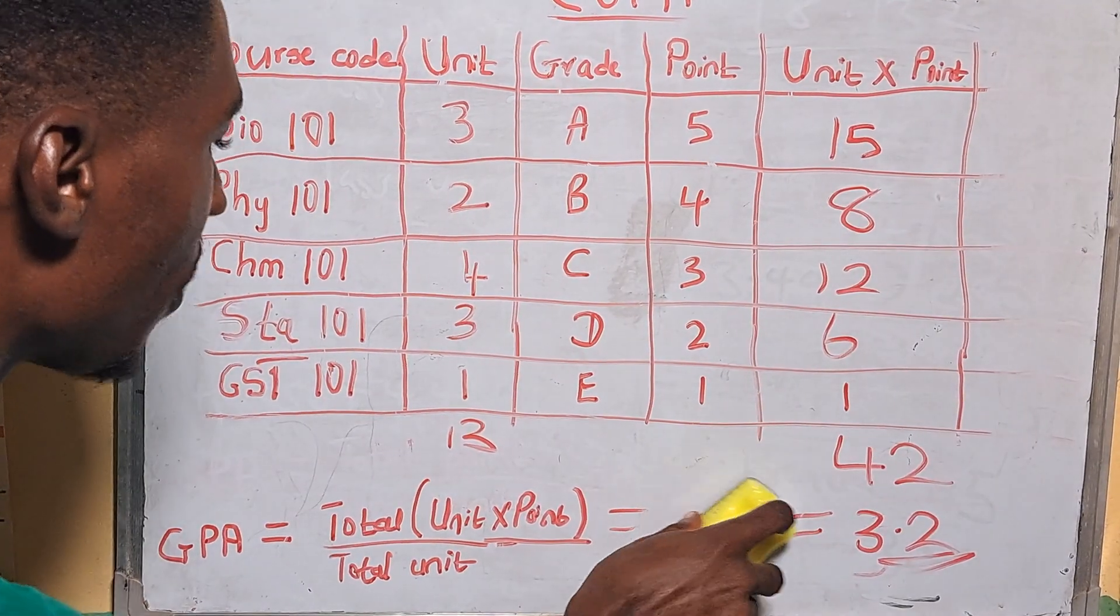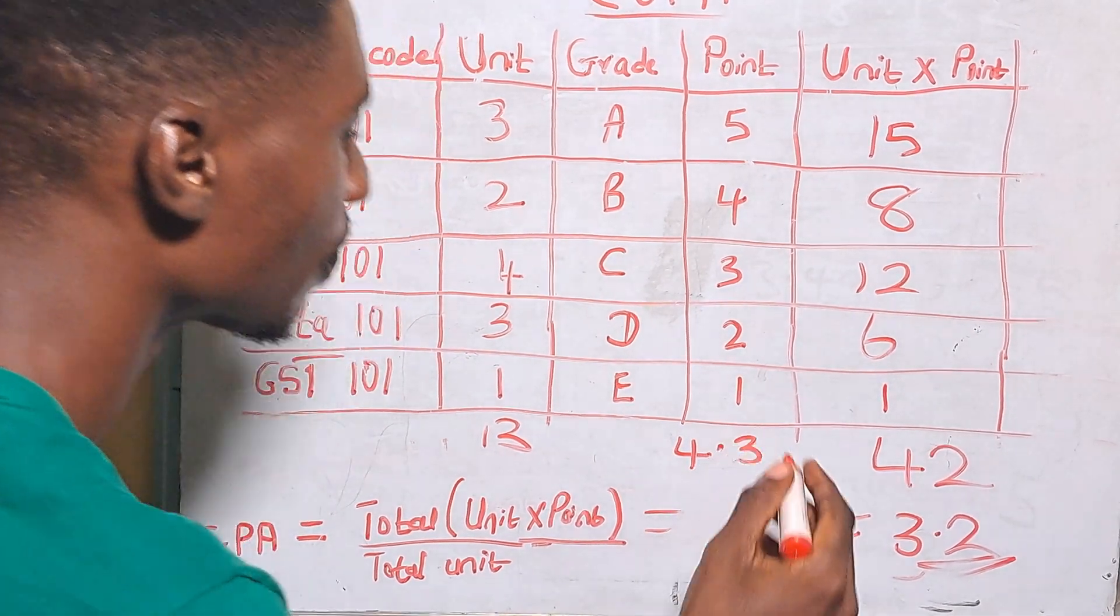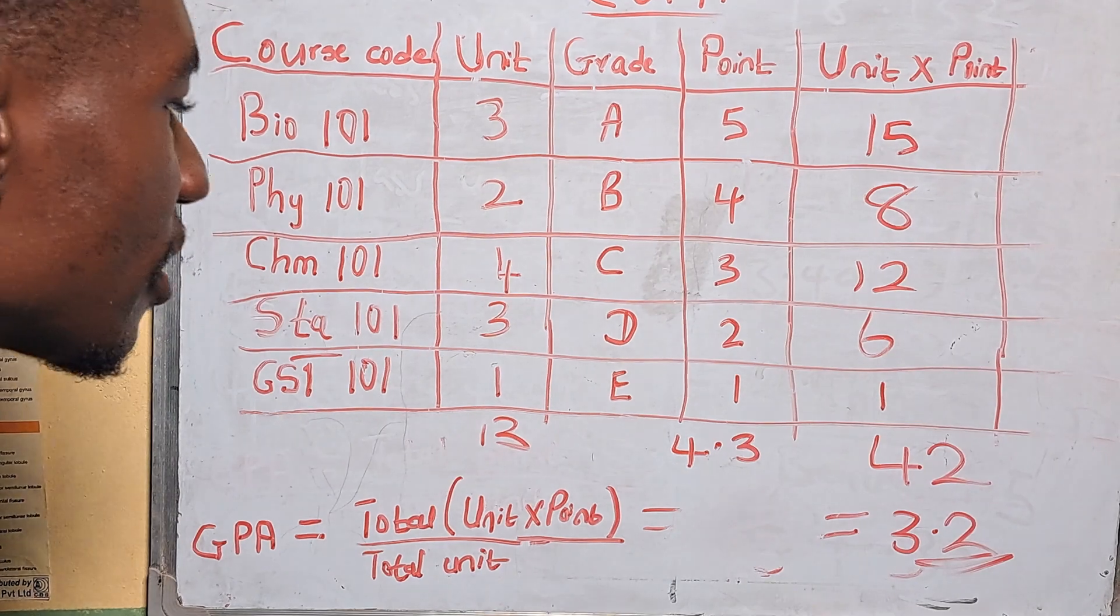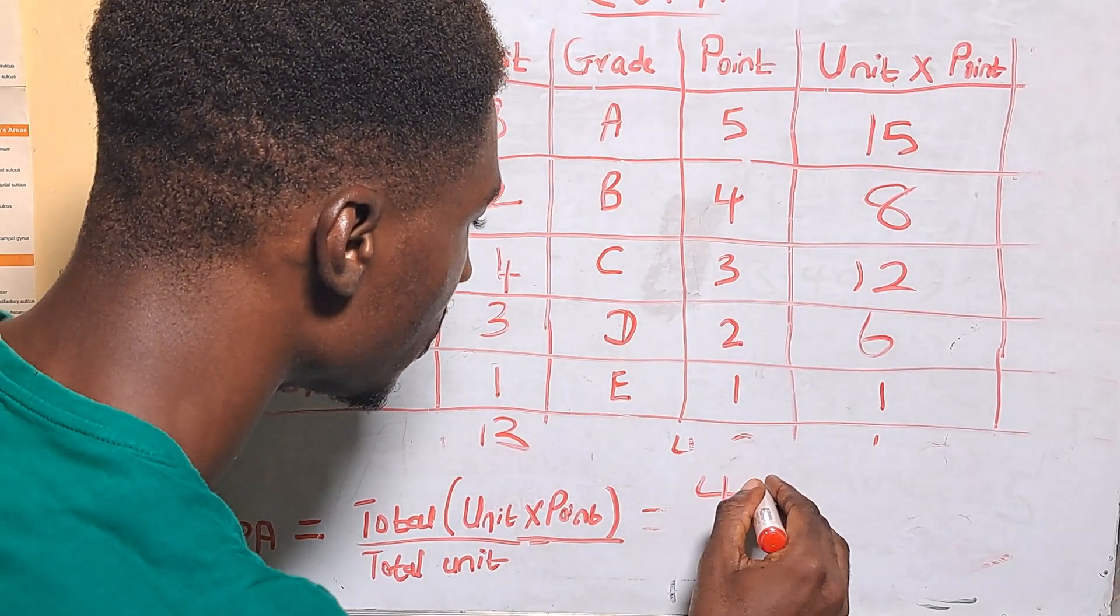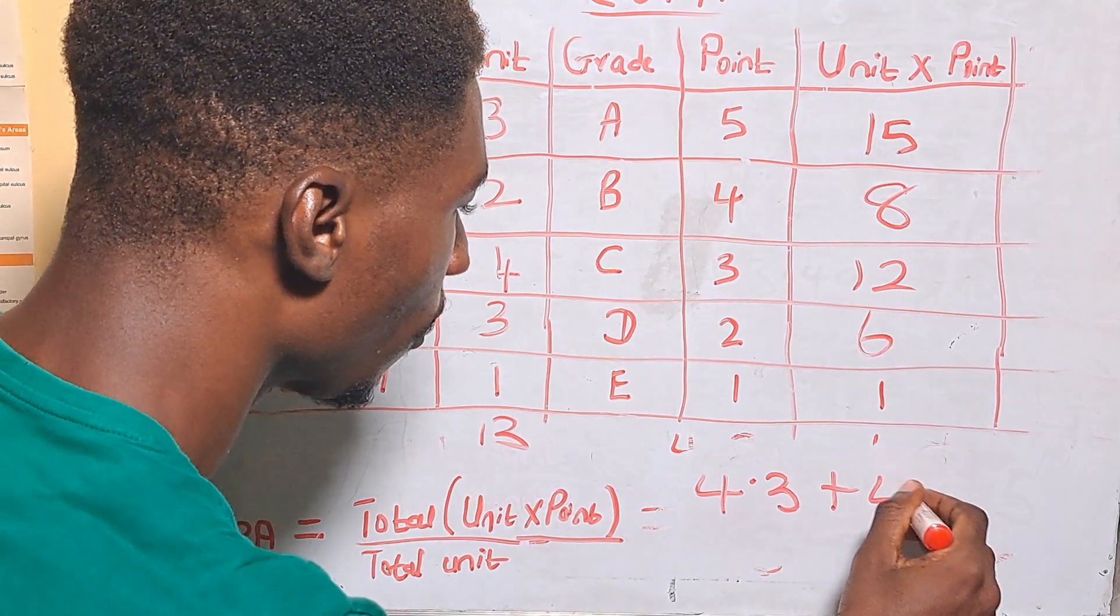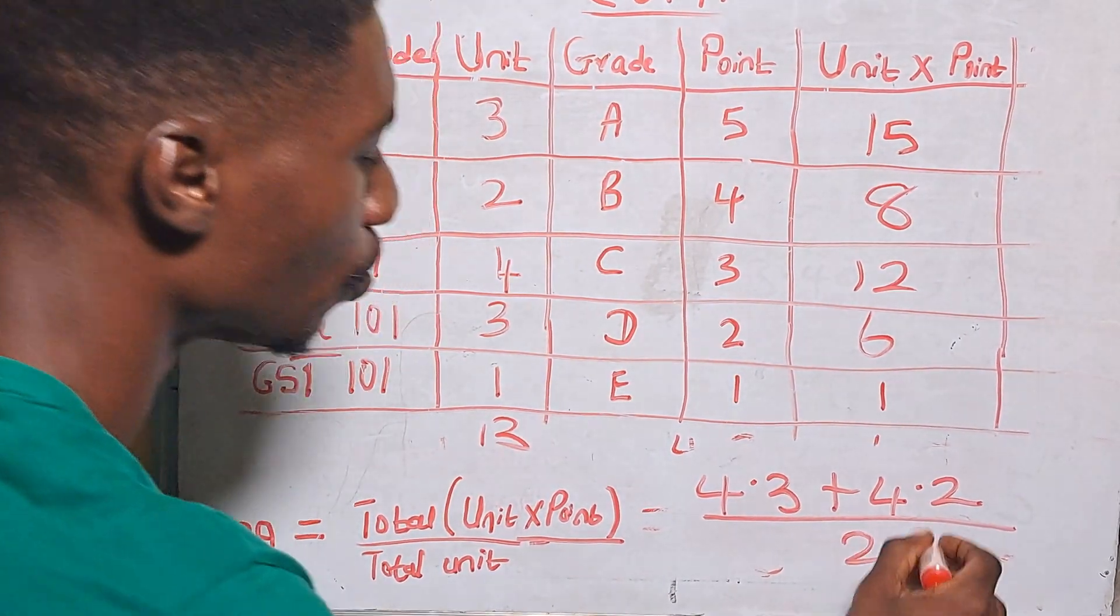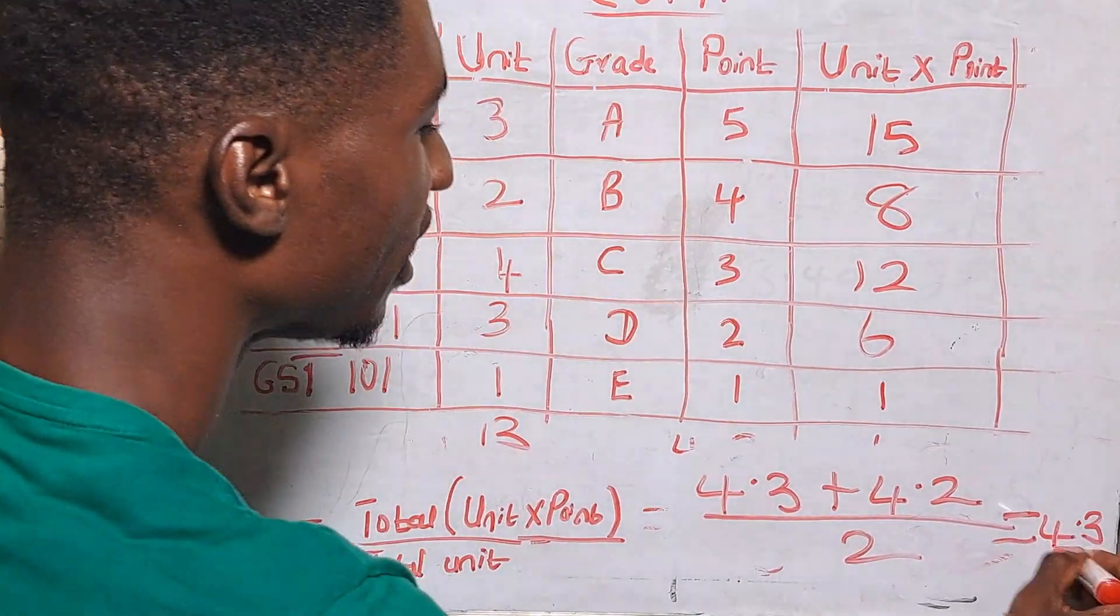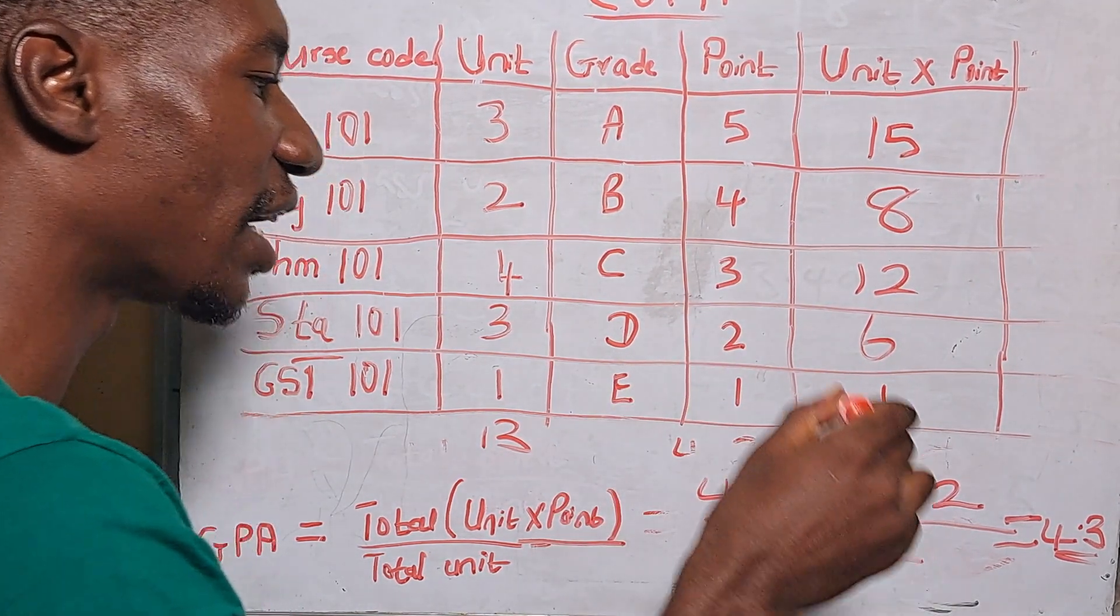Now you are going to calculate for your second semester. So let's assume after calculating for your second semester we have 4.3. So we are going to add up the GPA for the first and the second semester which will be 4.3 plus 3.2 divided by 2 and this will give us a total of 3.8.